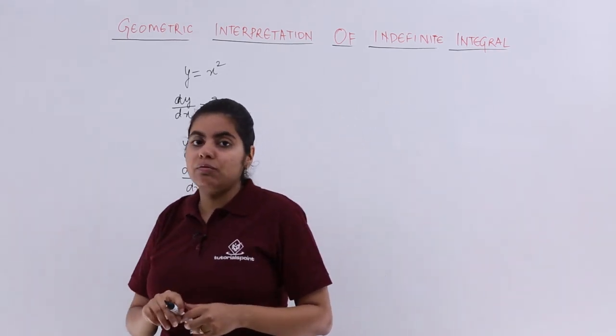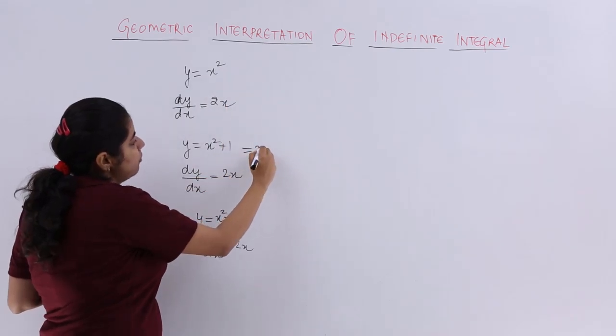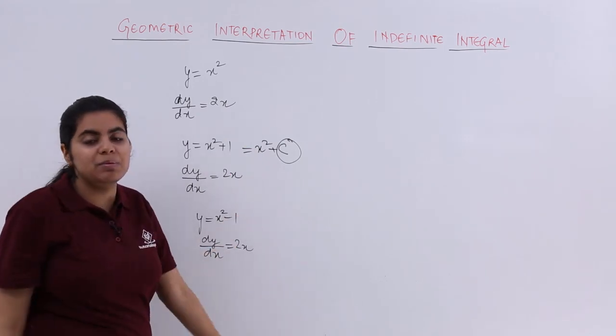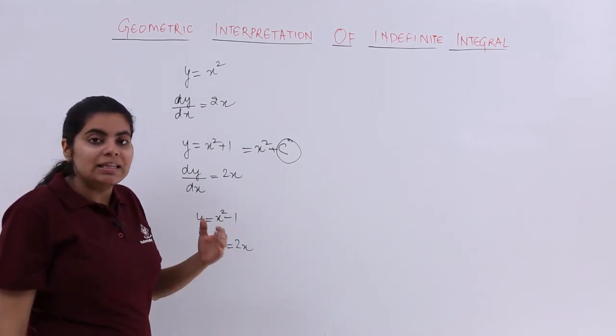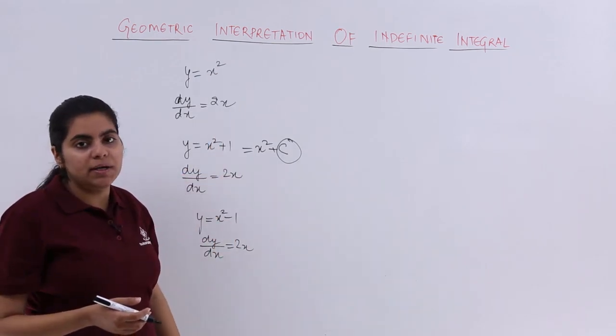So whatever value of c I put, because it is x square plus c form, c may be 0, c may be 1, c may be minus 1 and so on. We get parabola only and it will be either shifting upwards or downwards.